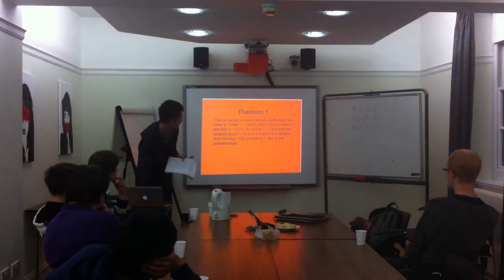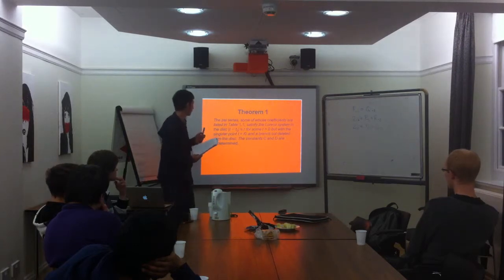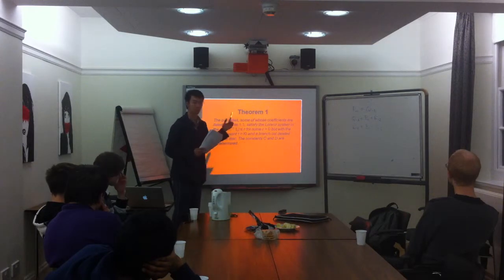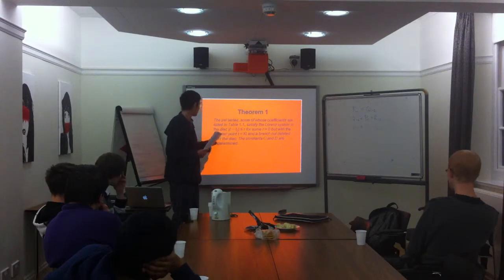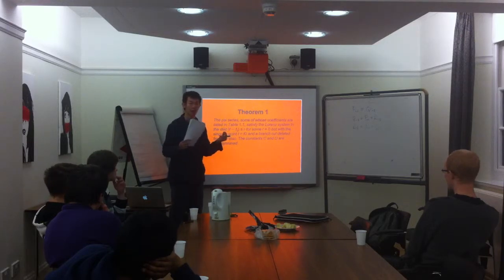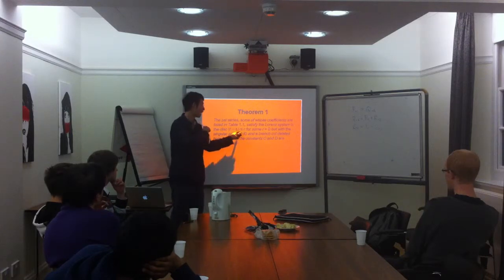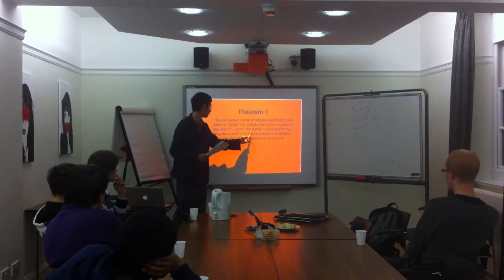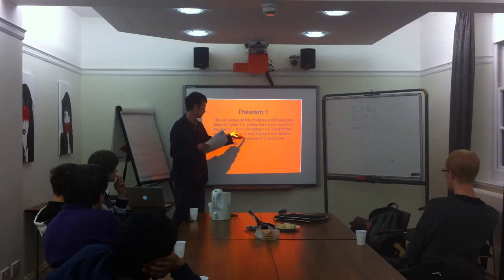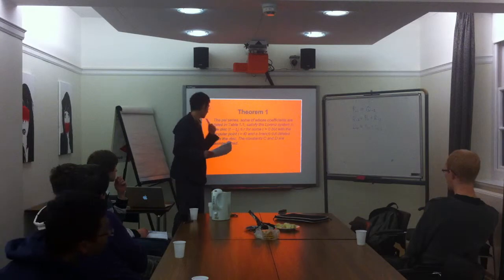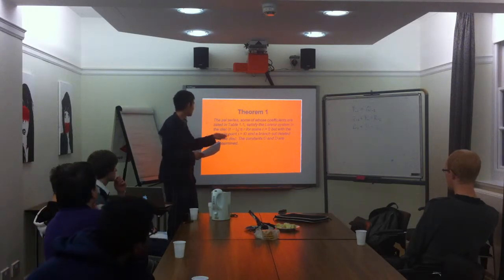The theorem that this paper concluded was that the psi series — some of whose coefficients are listed in table 1.1, which is the table I showed you just now — satisfied the Lorentz system, which was the original differential equation that we wanted to solve. In the disk where |t minus t-naught| is smaller than r, when time goes back an amount r and goes forward an amount r, the solution would work in that time area, for some r greater than zero. But with the singular point t-naught, and a branch cut deleted from the disk.